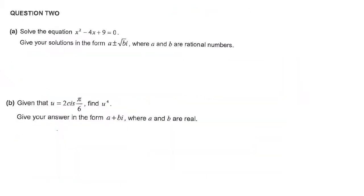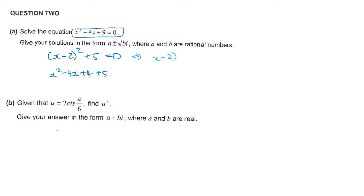Question 2. To solve this equation I'm going to complete the square. So (x minus 2) all squared equals x squared minus 4x plus 4. I need plus 5 so that it equals the original expression. To solve that, I subtract 5 from both sides and take the square root of both sides — this is where I introduce i squared to make it positive. That becomes x equals 2 plus or minus the square root of 5·i.